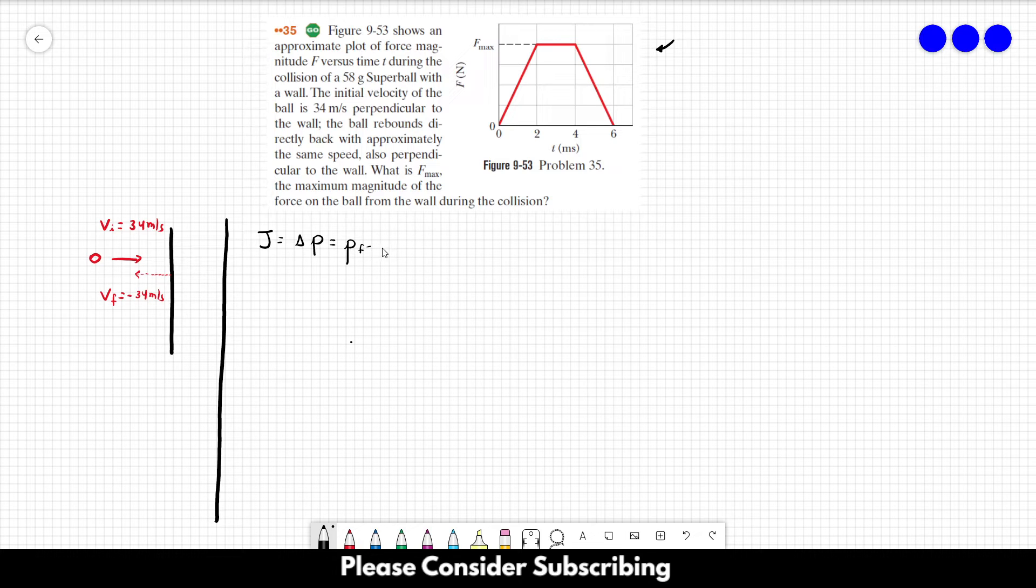Which by instance is equal to the mass which multiplies the final velocity minus the initial velocity. We have the mass, we have the velocities here, so we can calculate the impulse.